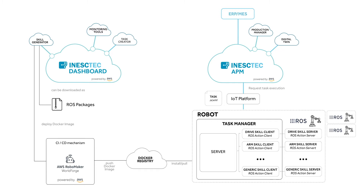It uses a modified version of ROS Industrial Continuous Integration Stack that allows building our code stack and executing both unit, integration, and simulation tests using AWS RoboMaker, while also using other Amazon services for smooth integration with the CI-CD pipeline.